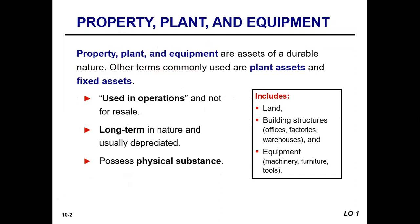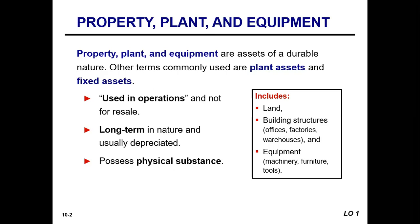For us to categorize something as property, plant and equipment — or plant assets or fixed assets — the assets have to be currently used in operations, not available for resale. They must be long-term in nature, lasting multiple years through multiple accounting periods. And plant assets have physical substance — they are tangible, meaning we can touch them. Examples include land, building structures, office buildings, factories, warehouses, equipment, machinery, furniture, tools, and office equipment.